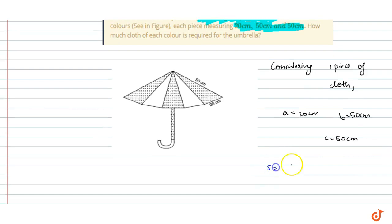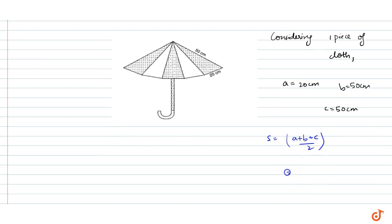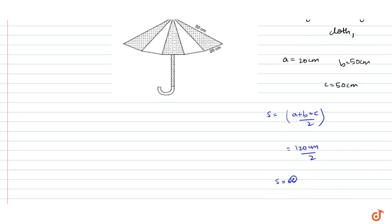First, calculate the semi-perimeter s, which is a plus b plus c divided by 2. That is 120 centimeters divided by 2, so s equals 60 centimeters. Now we find the area of one piece of cloth.